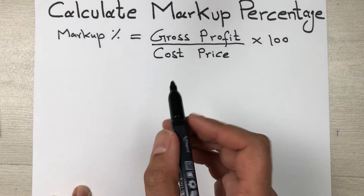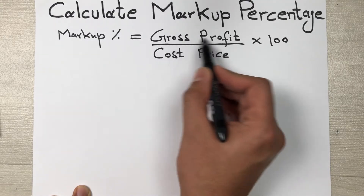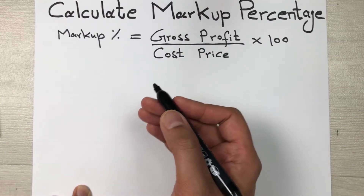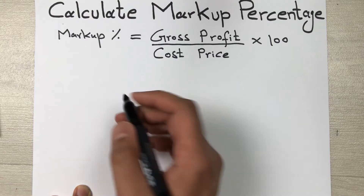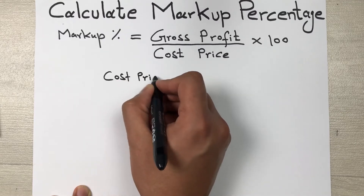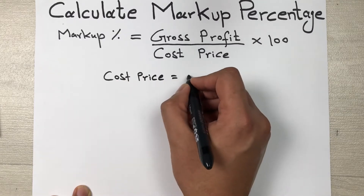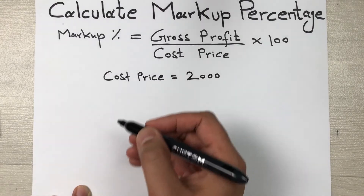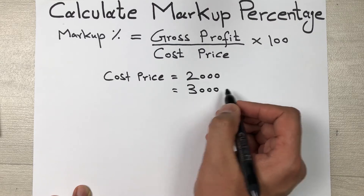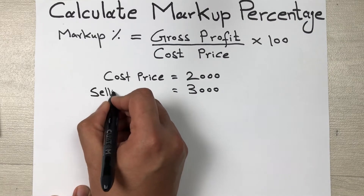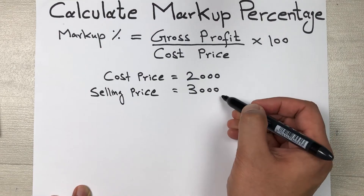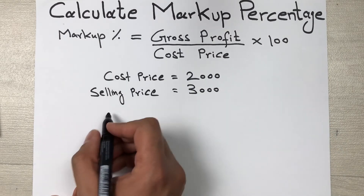Now first we will find out how to calculate gross profit. For example, you buy a t-shirt at a cost price of 2000, so the cost price of the t-shirt is 2000. Then you sell that t-shirt at 3000, so the selling price will be 3000.